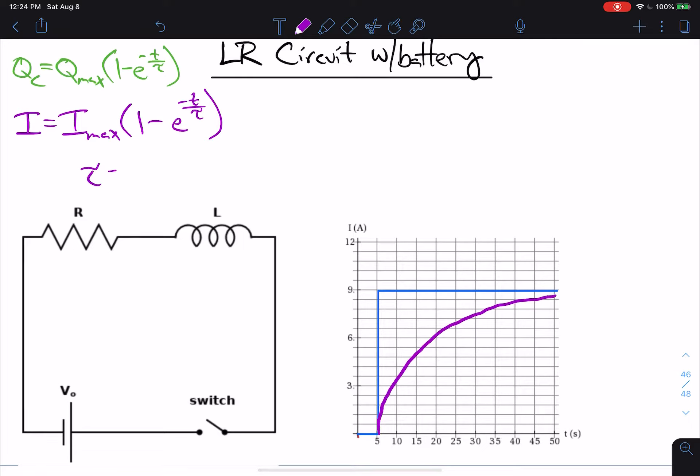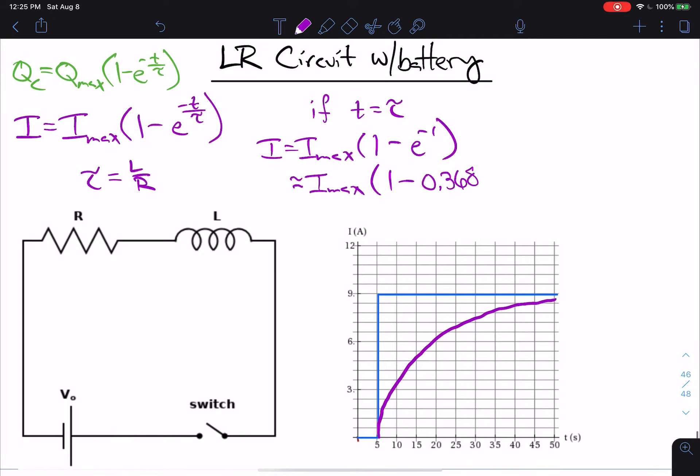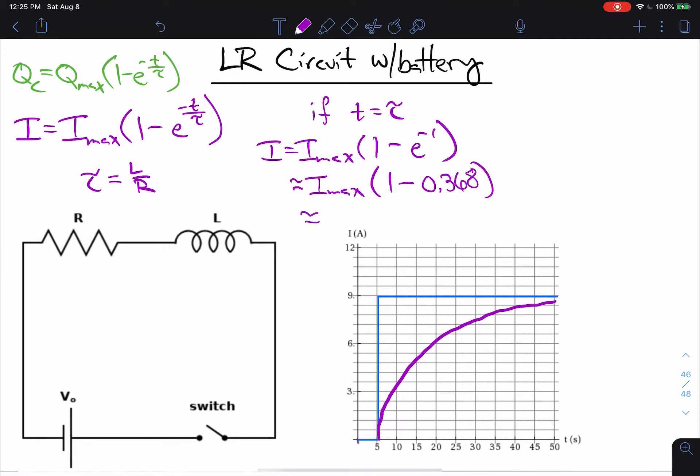Now, tau is L over R. And remember, if t equals tau, then what we're going to get is I equals I max. This is going to become one minus, so if I have, if t is tau, then tau over tau is going to cancel. So this is going to be e to the minus 1, so e to the negative 1. And that's approximately equal to 0.368. And so that means in this situation, we get approximately 0.632 times I max.